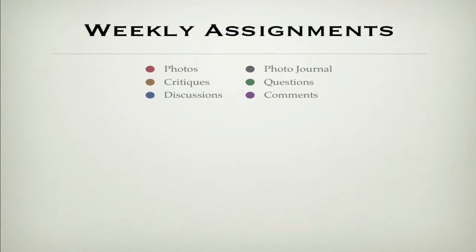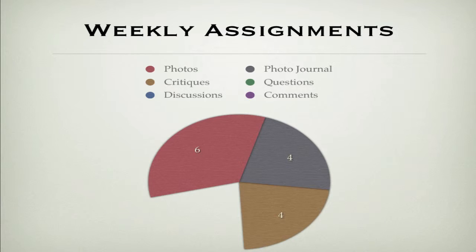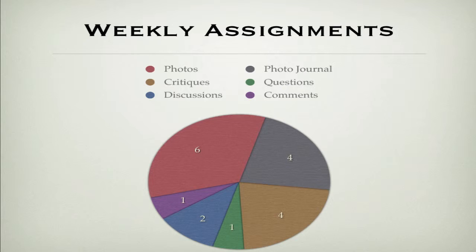The weekly assignment — basically your grade will be broken down into six parts: photos, photo journal, critiques, questions, discussions, and comments. Those are the only six things I'll be grading you on. Six points for photos per week, four points for a photo journal, four points for the critiques, one point for questions, two points for discussions, and one point for submitting comments to a variety of fellow photographers. You can see how important it is to keep a reflective and nice photo journal, because they're weighted almost as much as photos.